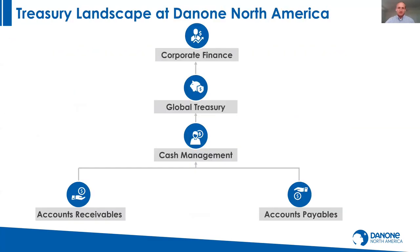As far as our treasury landscape and where the cash forecasting piece comes in: we have accounts receivable providing our cash-in forecast and accounts payable providing our cash-out forecast to our US cash management team, who takes all those inputs and presents them to our global team, who then reports out from the different regions.